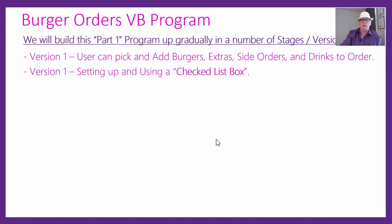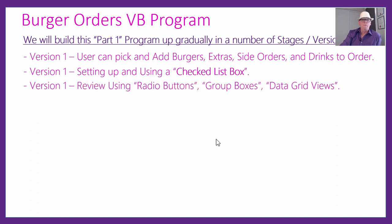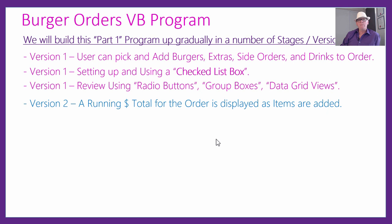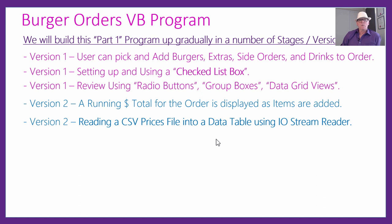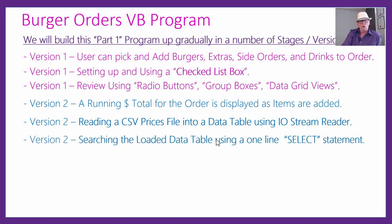The checked list box is what we're using for all those toppings on the burger — we haven't done one before. We're also going to be using radio buttons, group boxes, and data grid view, which we have done before in previous lessons, so that should be familiar. We'll keep a running total for the order — each time you add an item it's going to redo all the prices and work out the current total. For prices, we're going to read in a CSV file — a comma-separated values file — put it in a data table and read it in with a stream reader, which we've done before in VB.NET.